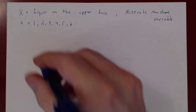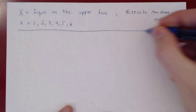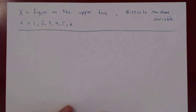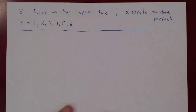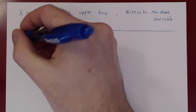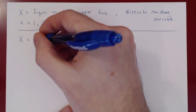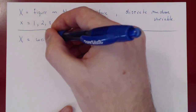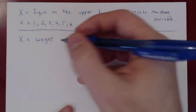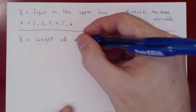Let's consider another experiment. What if we consider the weight of a randomly selected person? Think of it as you're walking along the street — you pick someone at random and you consider their weight. So X would be a random variable: the weight, say in pounds, of a randomly selected person.